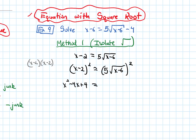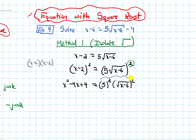On the right-hand side, I have this squared exponent. Because 5 is multiplying the square root, I do get to distribute that exponent to both terms — I can distribute the exponent when things are multiplied, not when adding or subtracting. So I get 5 squared times root x minus 6, squared. That works out to 25 times (x minus 6), since squaring the square root just gives x minus 6.